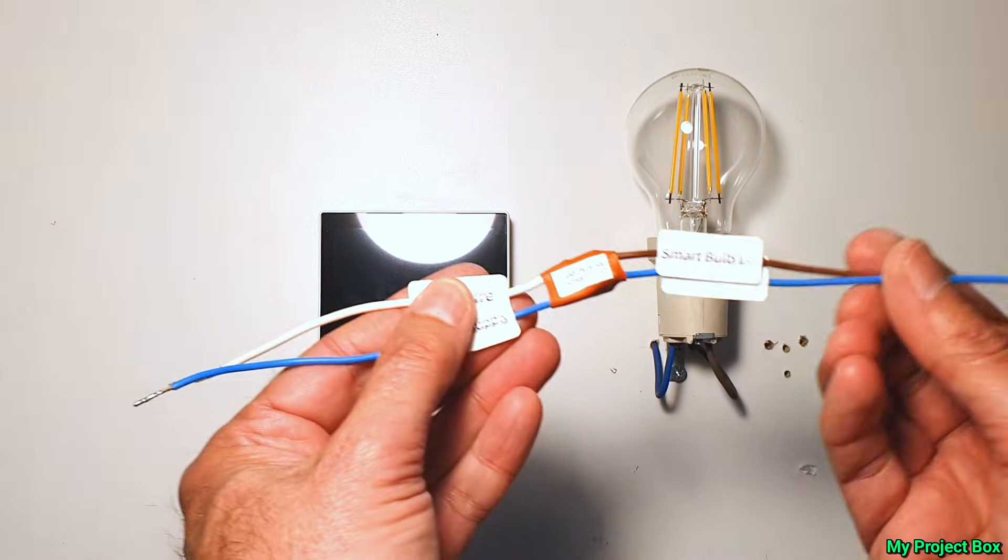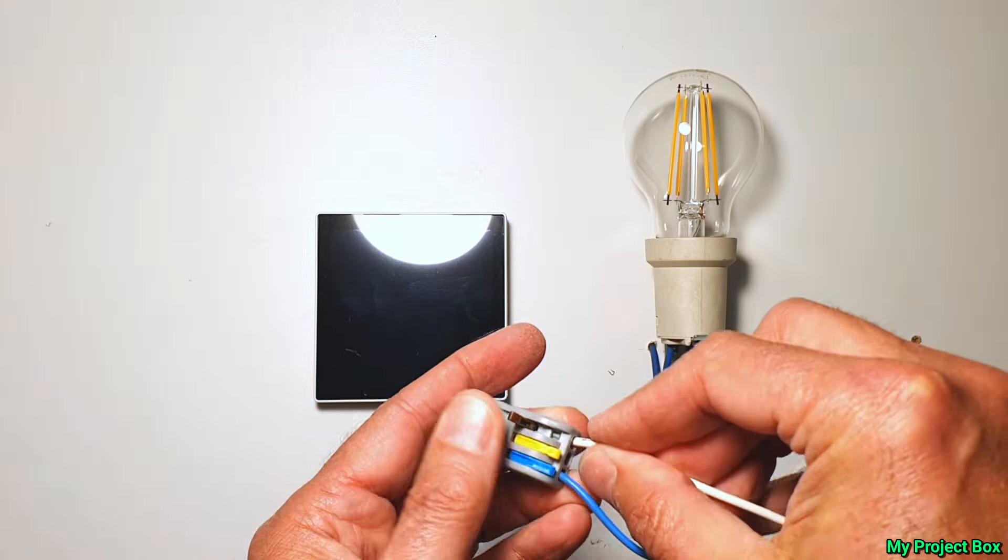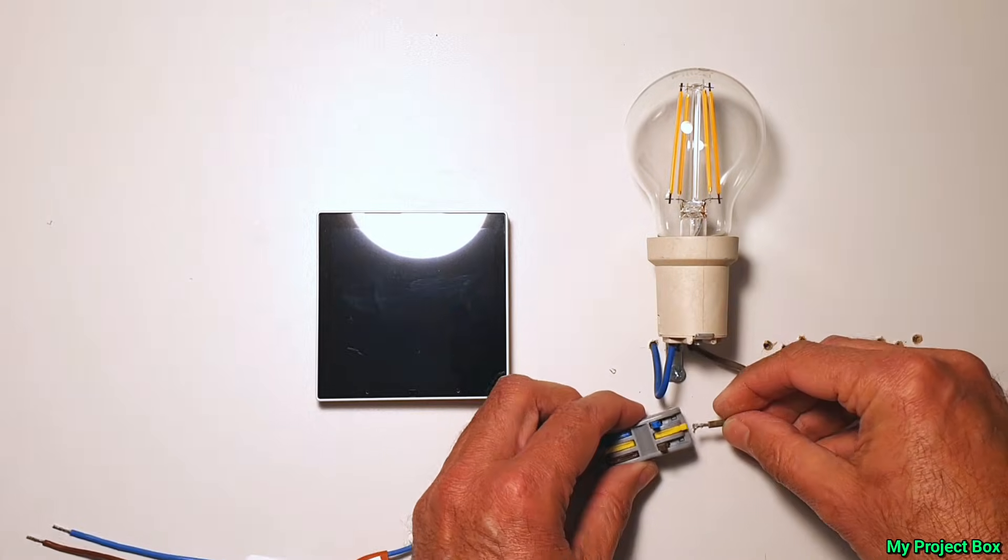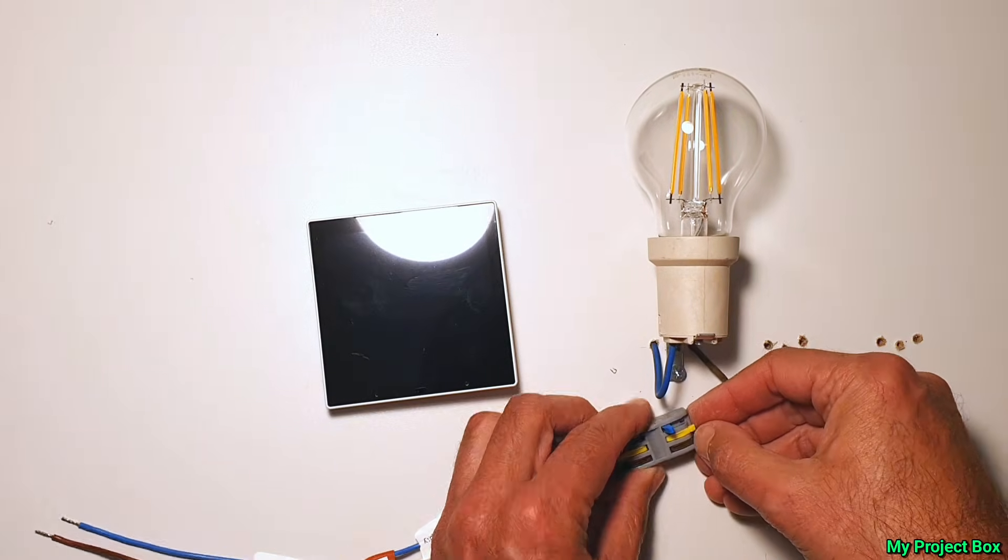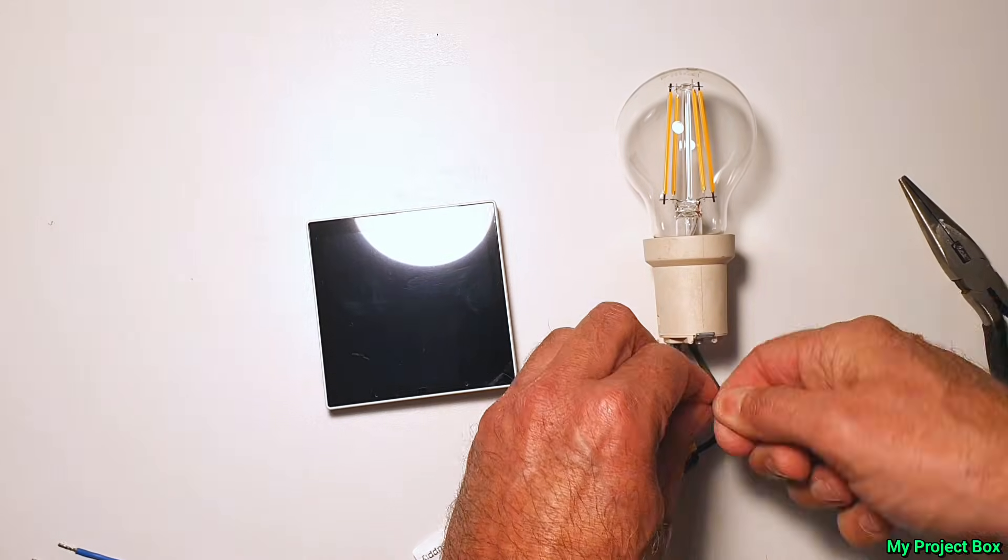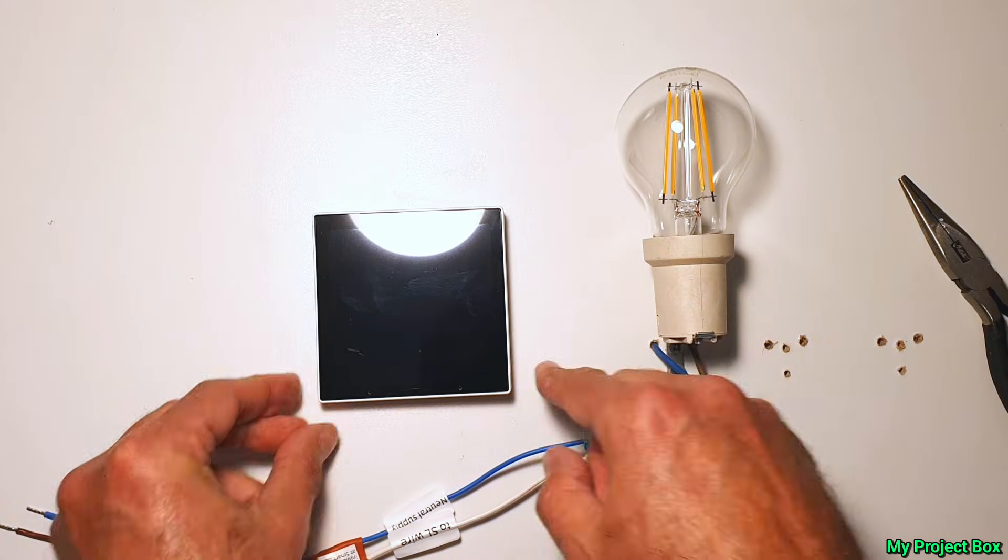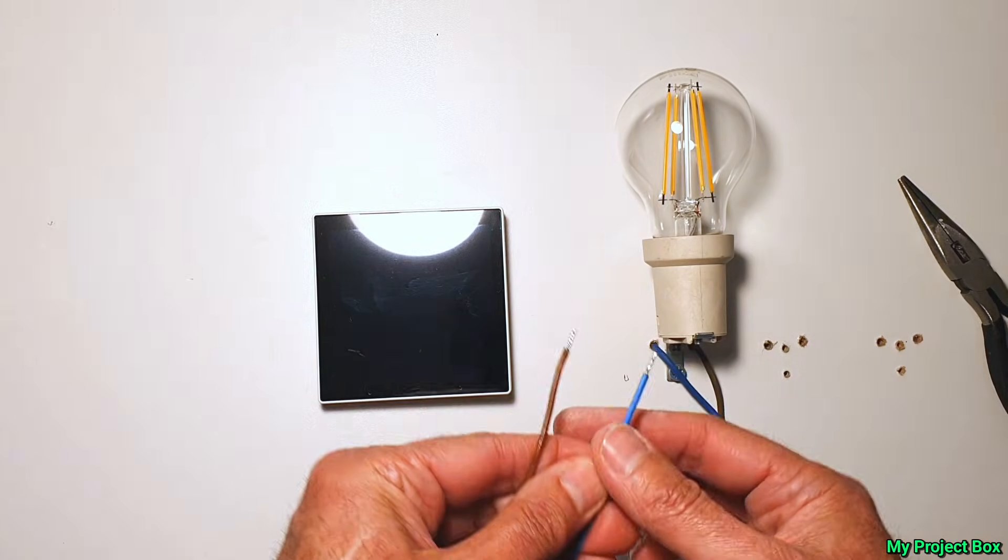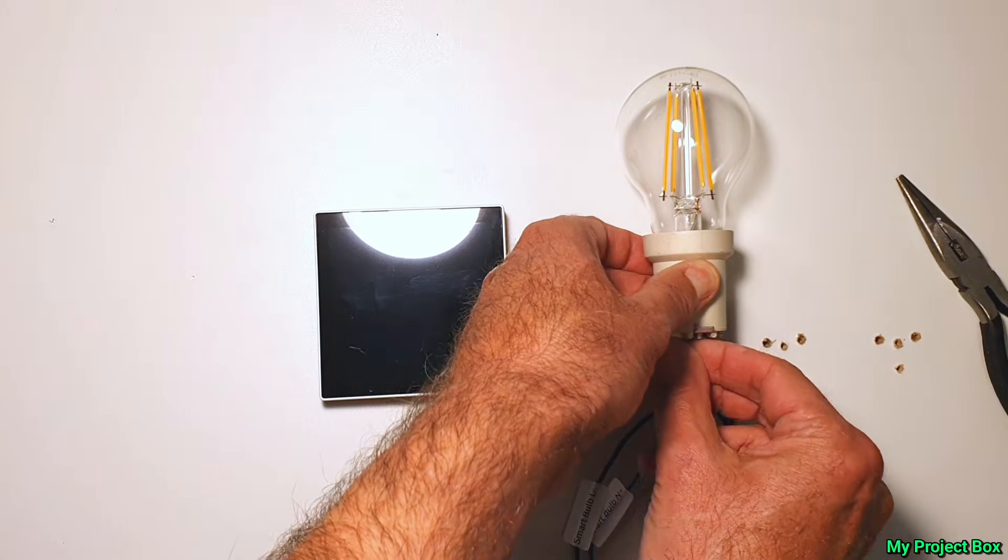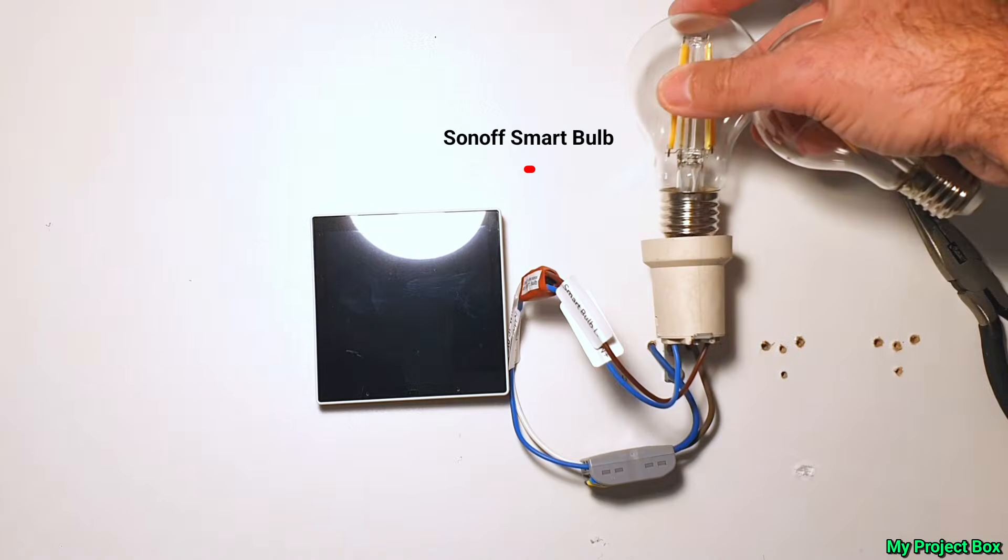Now we can fit our bypass module in line with our light fixture. I'll use this quick connector block to connect to the one side of my modules neutral and switch live. Now we disconnect our switch live and connect it up to our bypass module and we do the same with our neutral supply and connect it up to our bypass module. Then the output of our bypass module connects straight up to our light fixture. We then need to replace our standard light bulb with a smart bulb so that the NS Panel can control it.